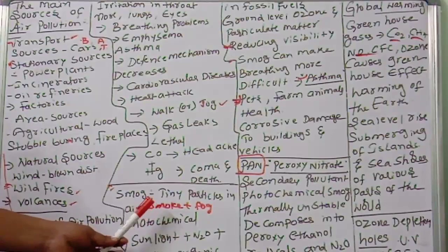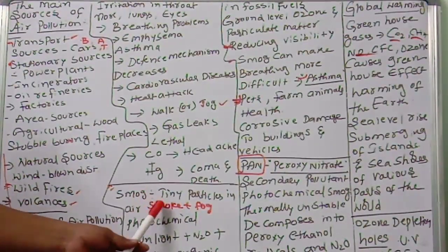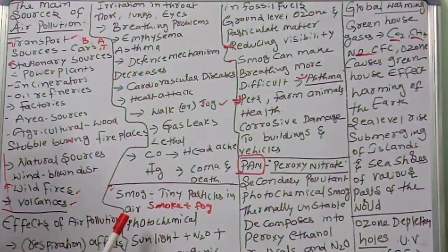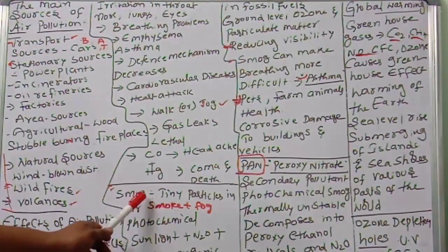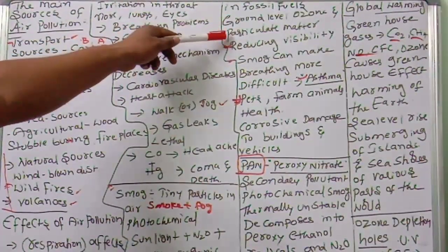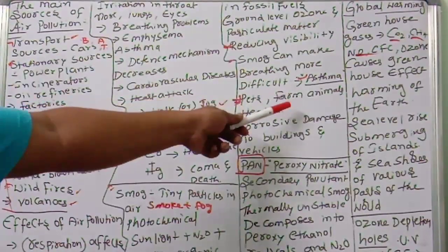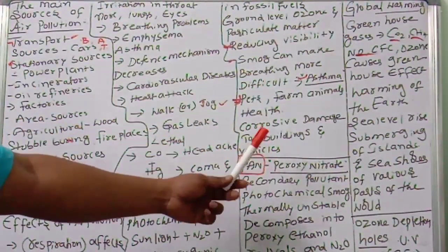Smog is air pollution caused by tiny particles in the air. Smog forms from the photochemical reaction of sunlight, nitrous oxides, and volatile organic compounds in fossil fuels. This increases ground-level ozone and particulate matter, reducing visibility, making breathing more difficult, causing asthma, and affecting the health of humans and animals. Corrosive damage to buildings and vehicles also occurs, and buildings lose their beauty because of smog.